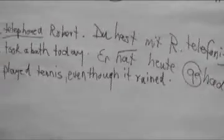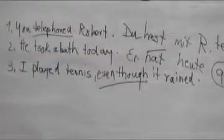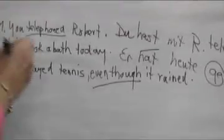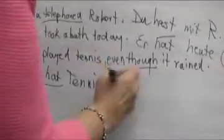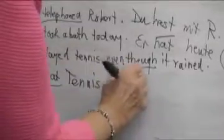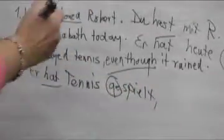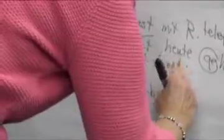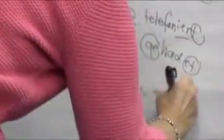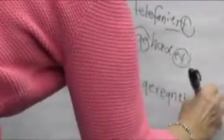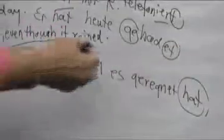The third sentence uses a subordinating conjunction — 'even though': 'He played tennis even though it rained.' He has played tennis: 'Er hat Tennis gespielt' — 'spielen' becomes 'gespielt.' The conjunction is 'obwohl.' To rain is 'regnen,' a regular verb, so it becomes 'geregnet.' The conjugated form of haben goes to the end of the phrase: 'obwohl es geregnet hat.' If you did that correctly, you understood the concept. If not, just go back and review and practice — it shouldn't be too complicated.